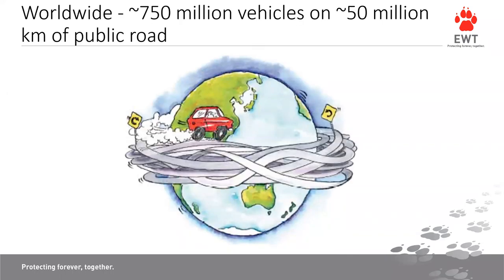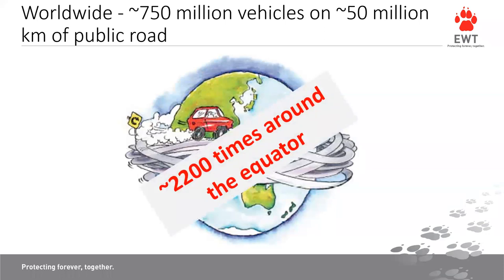Let's put it into perspective. Worldwide, 750 million vehicles are on our roads, and approximately 50 million kilometres of public road exist. That's very difficult to get our heads around. To put it in perspective, 50 million kilometres of public road is approximately driving 2,200 times around the equator. That's how many roads are actually on the planet — that's a lot.